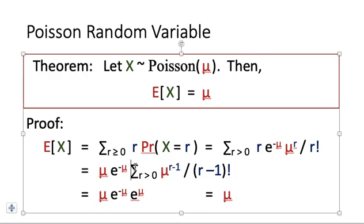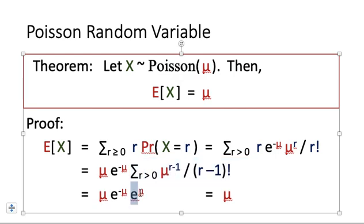Looking at this term by term, this is again the Taylor expansion of e to the power mu. So we can replace the shaded part with e to the power mu, and after cancellation, we get that this equals mu. So the expected value of a Poisson random variable is indeed the corresponding parameter mu.